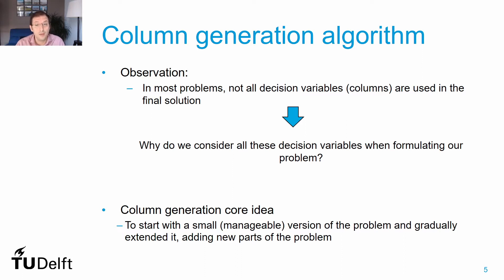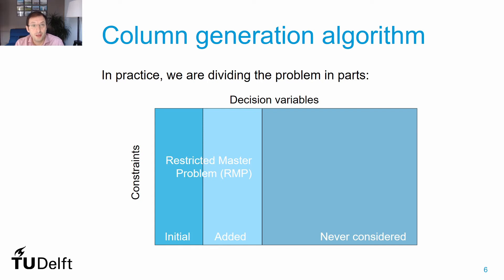Each decision variable is a column in our linear programming table, so the goal will be to generate columns only when we need them. If we know how to generate these columns by running simple problems in an iterative process, we can start with a small, feasible, and manageable version of our problem and gradually add a limited number of columns until we find the optimal solution. We can imagine our tableau being split into two sets of columns: the ones we are using and the remaining columns we are not using at all. In most cases, the decision variables we are not considering are completely unknown to us and have to be generated when solving each iteration.